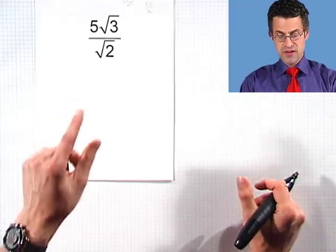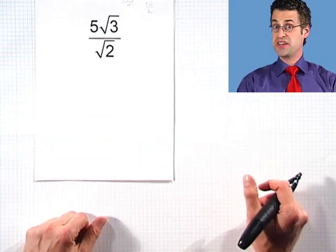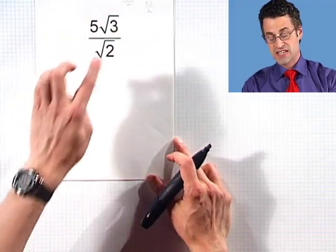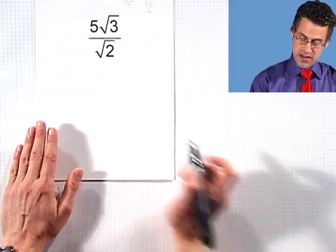You know, a lot of times in math, we have to write numbers out, but when there's fractions, we don't want square roots in the denominator. There's a really great trick to simplify fractions like that by using what are called rationalizing denominators. And here's how you do it. It's really simple.